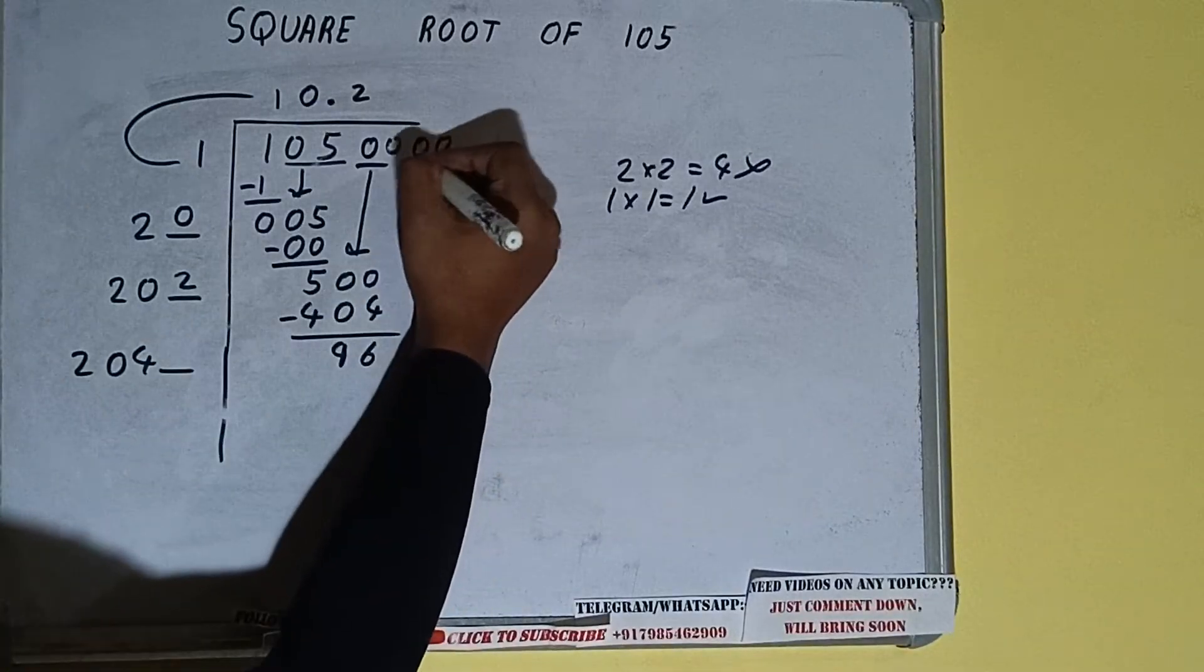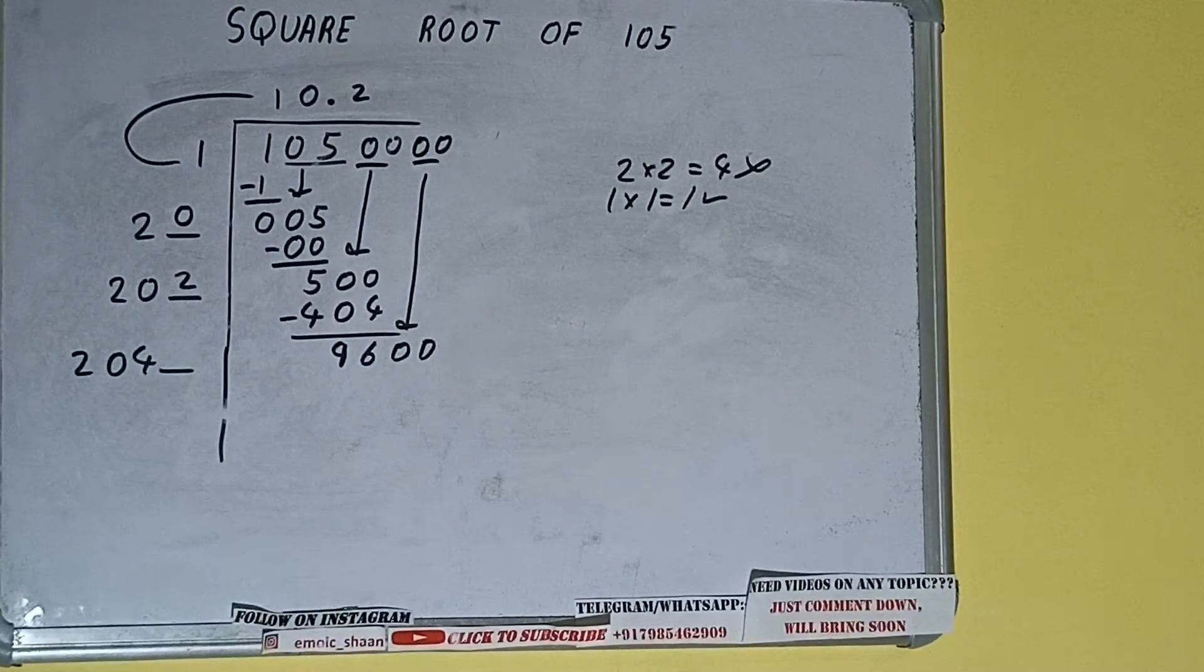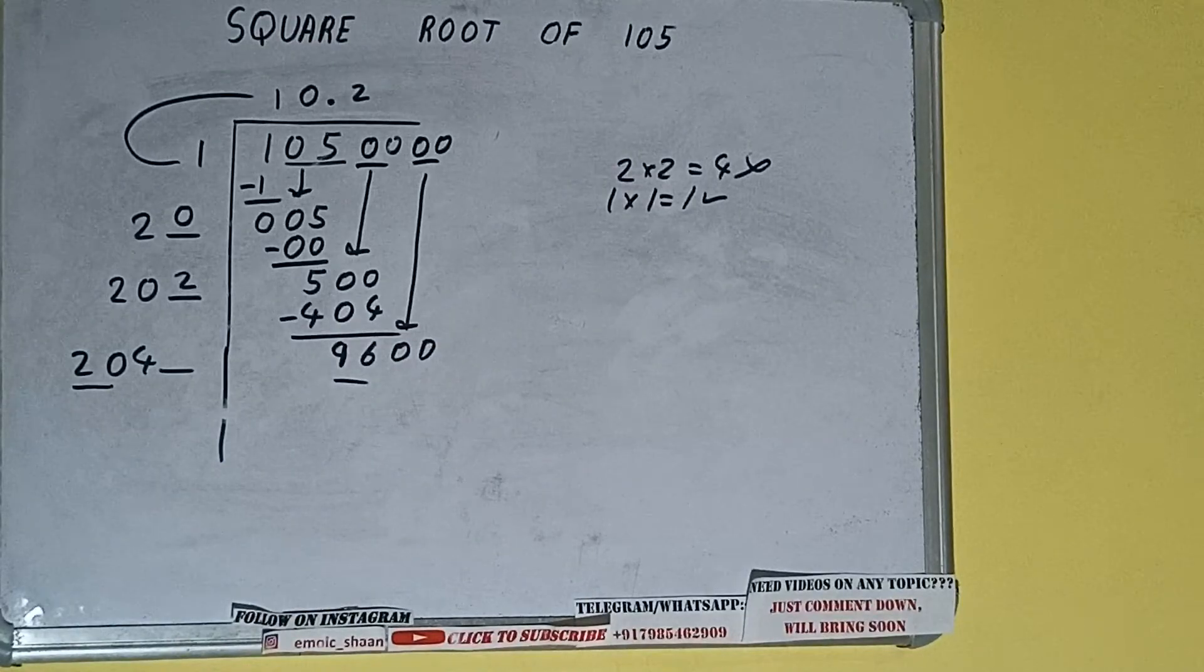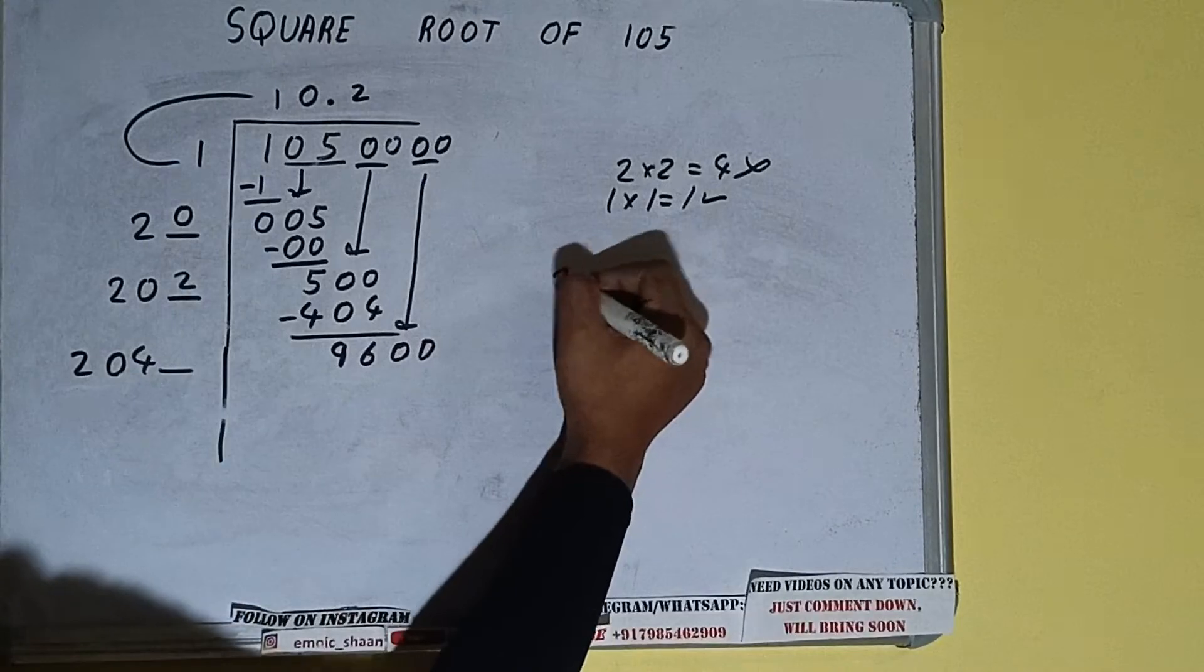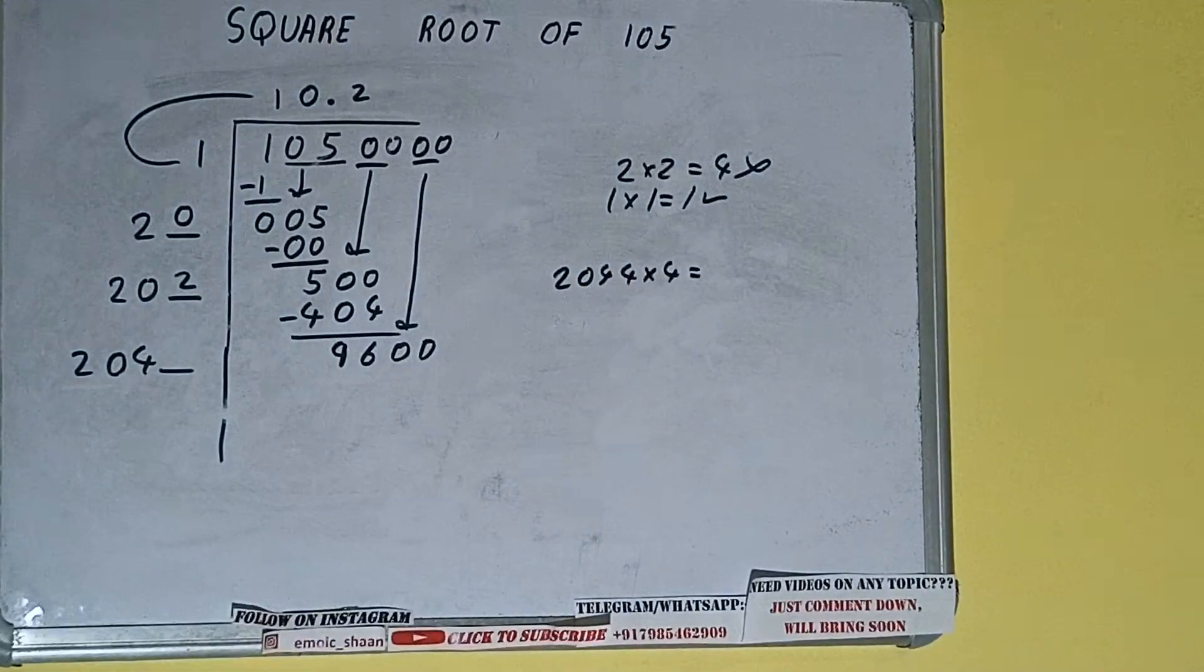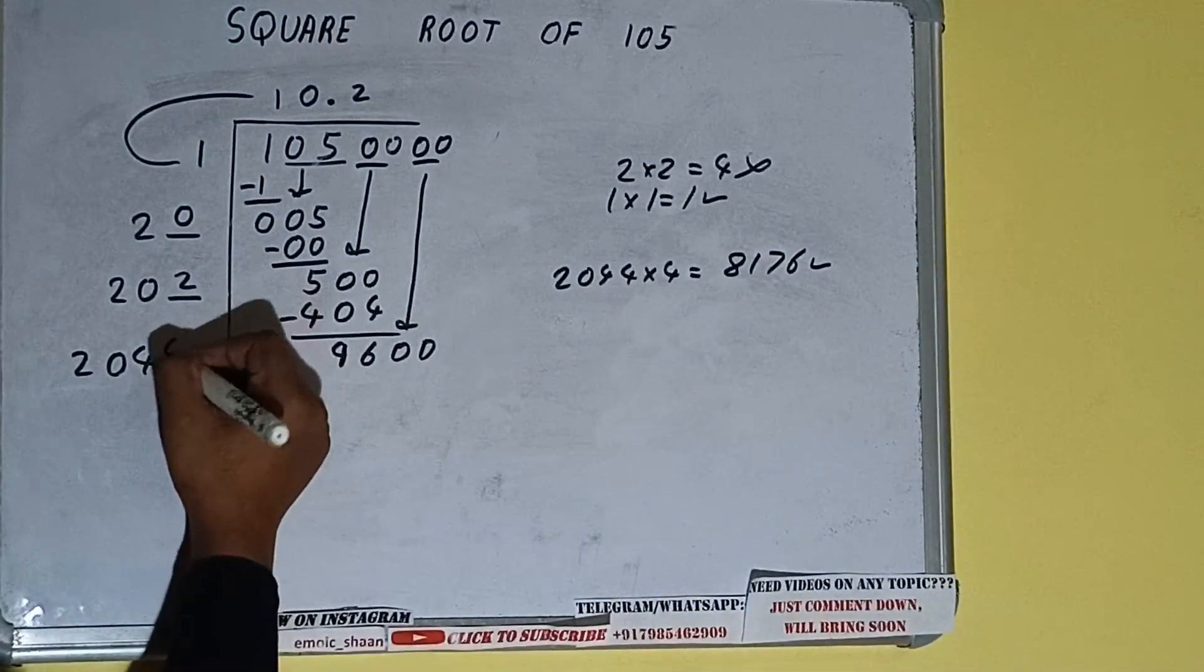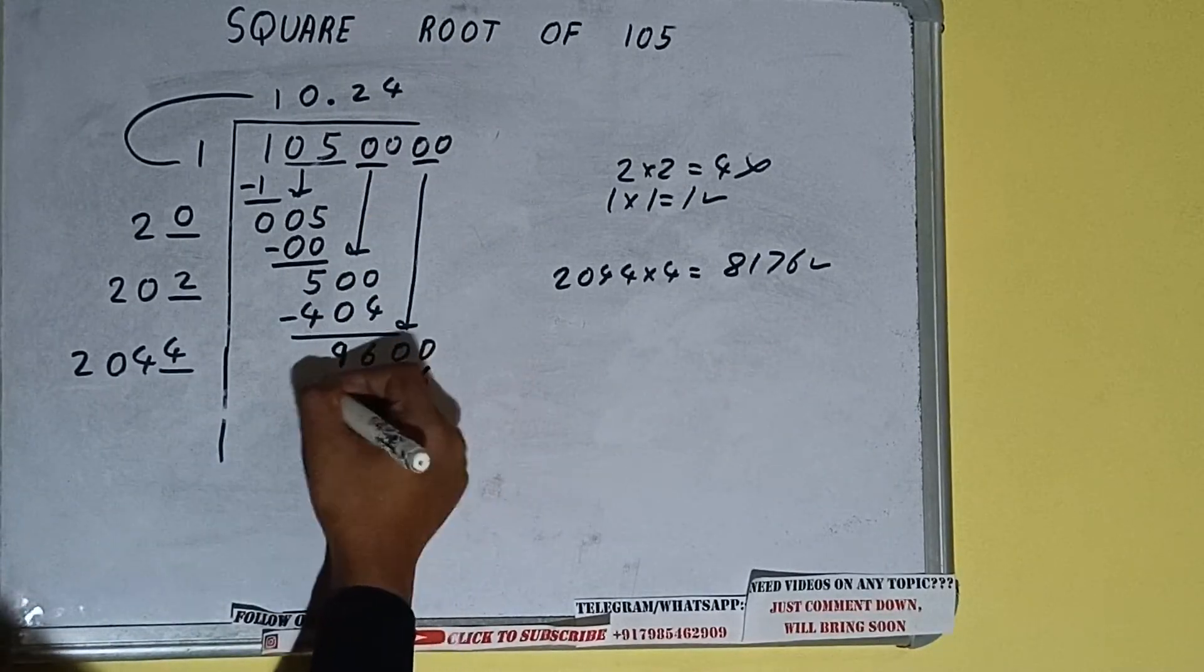And this number we need to make it big so bring the next pair of zeros down and it will be 9600. Now compare this 20 with this 96. So 24 times is 80 right, so we can try four times. 204 into 4 we can try and we'll be getting 8176 which is good to take. So 4 here and 4 here, 8176 subtract.